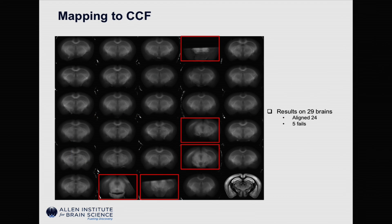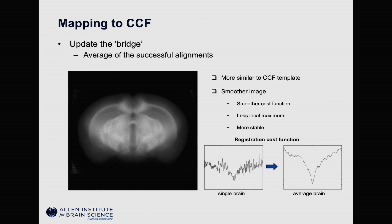We first tested this idea on 29 brains. At the end of the row, it's a coronal section from the CCF template, and at the same location we take one coronal section from each of the registered brains as well. If the registration is good, we should see very similar images. As we can see from these 29 brains, we have about 24 of them registered and we failed on five. This is not bad, but we believe every mouse deserves a meaningful life.